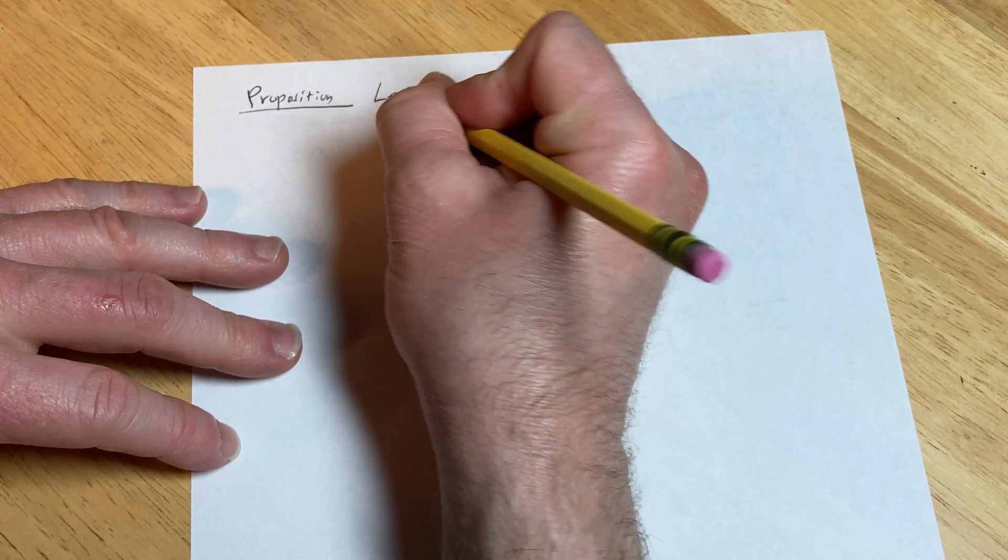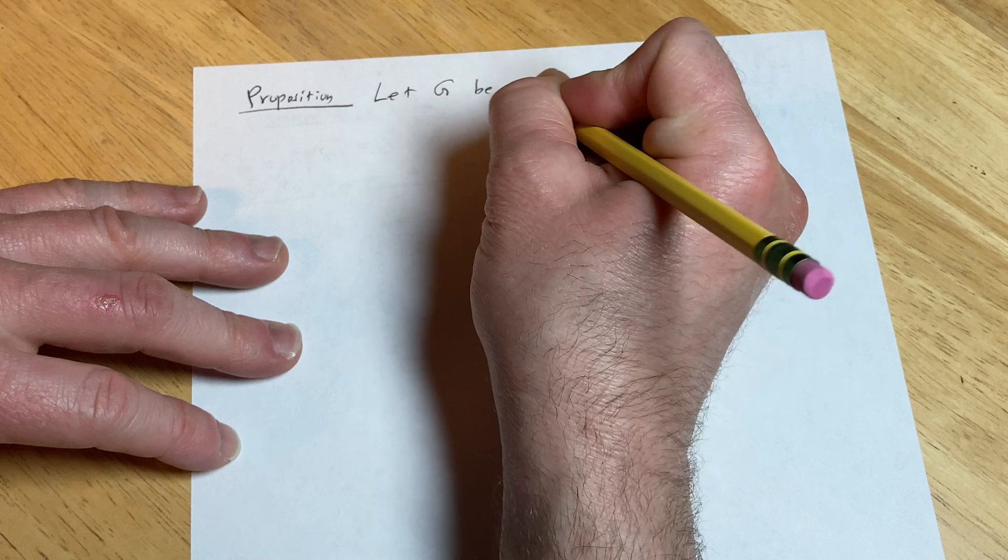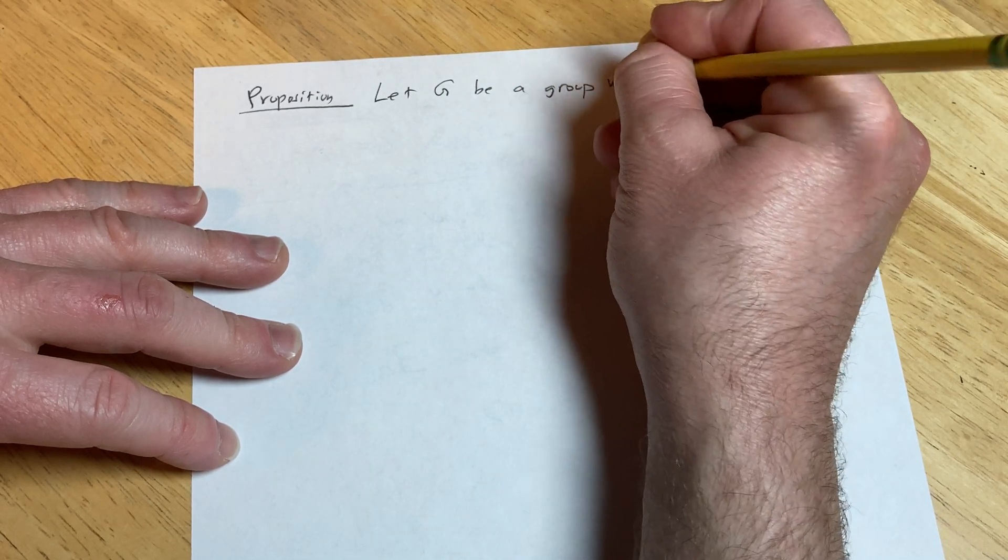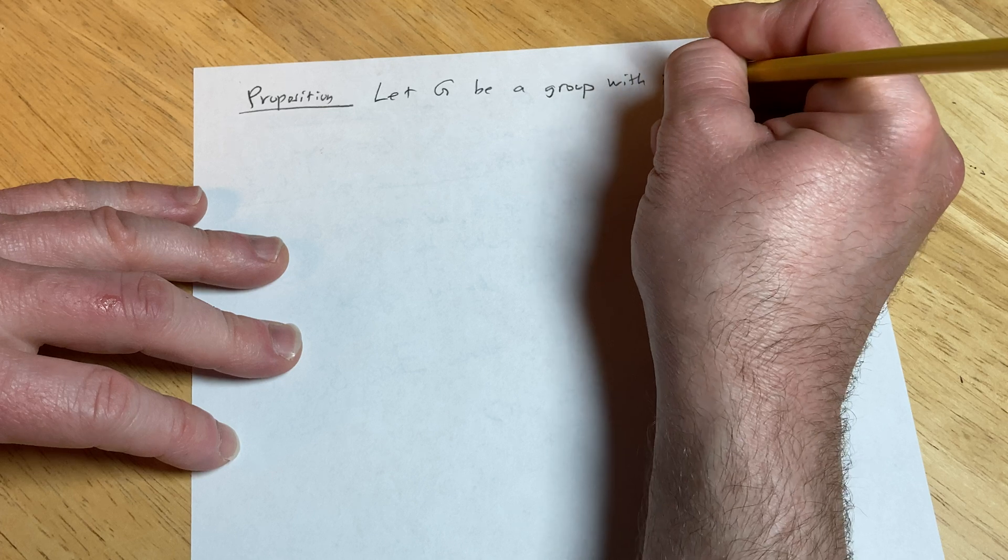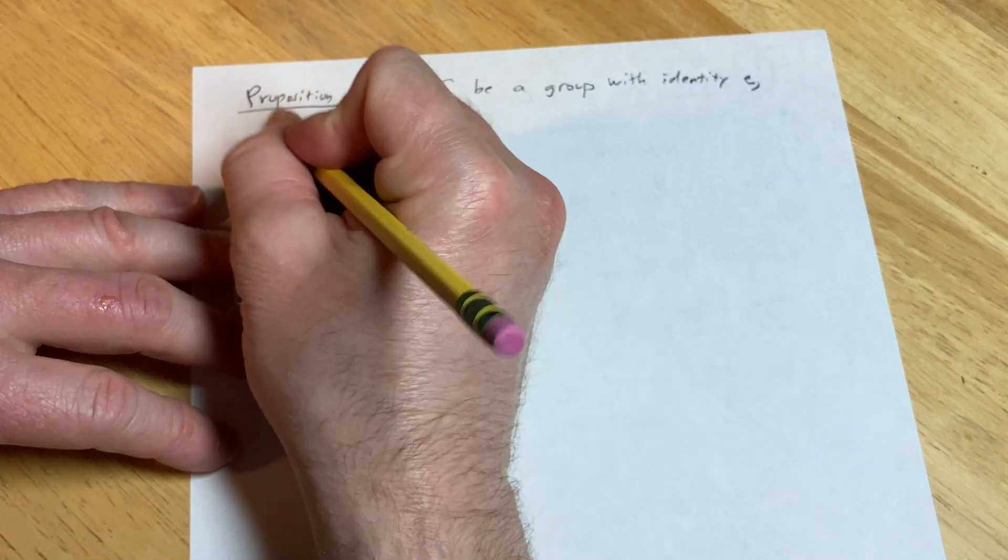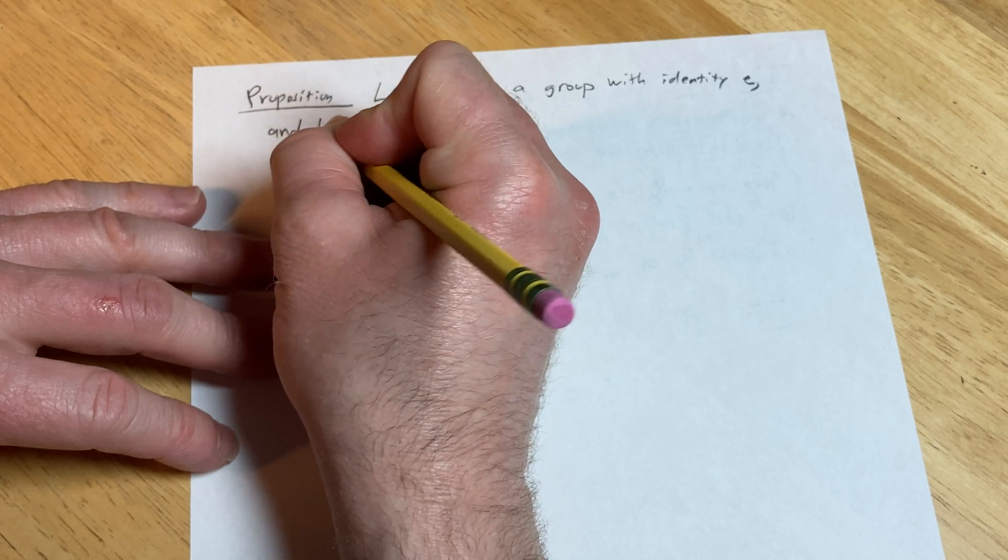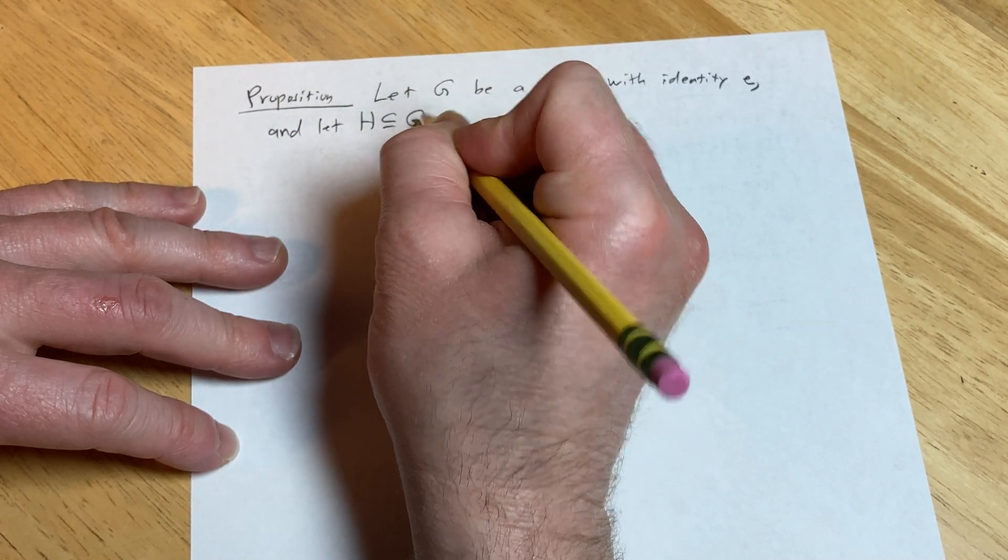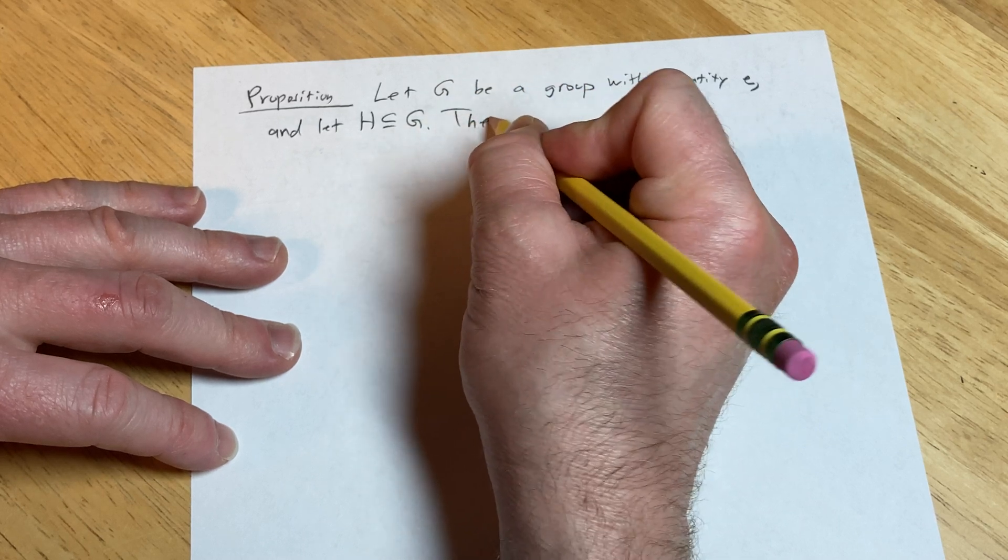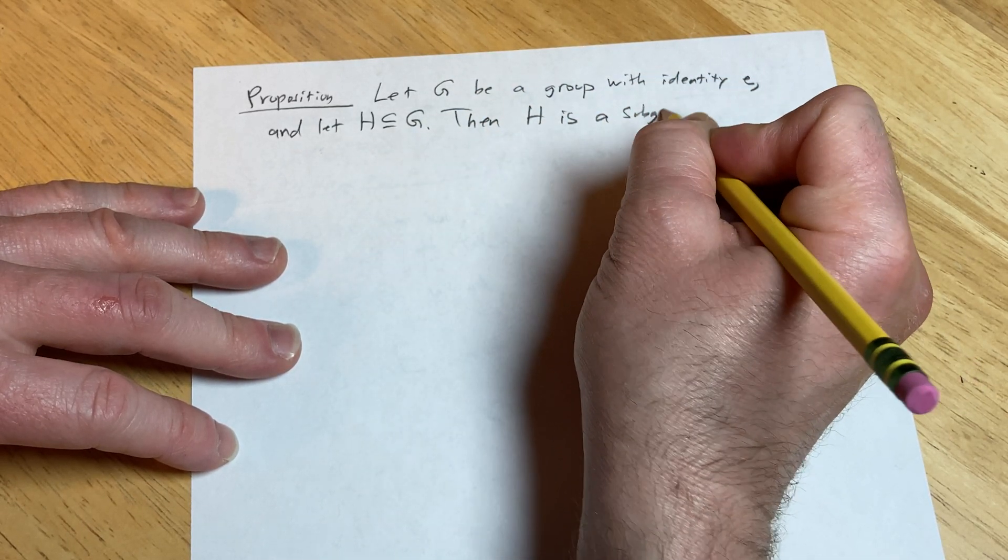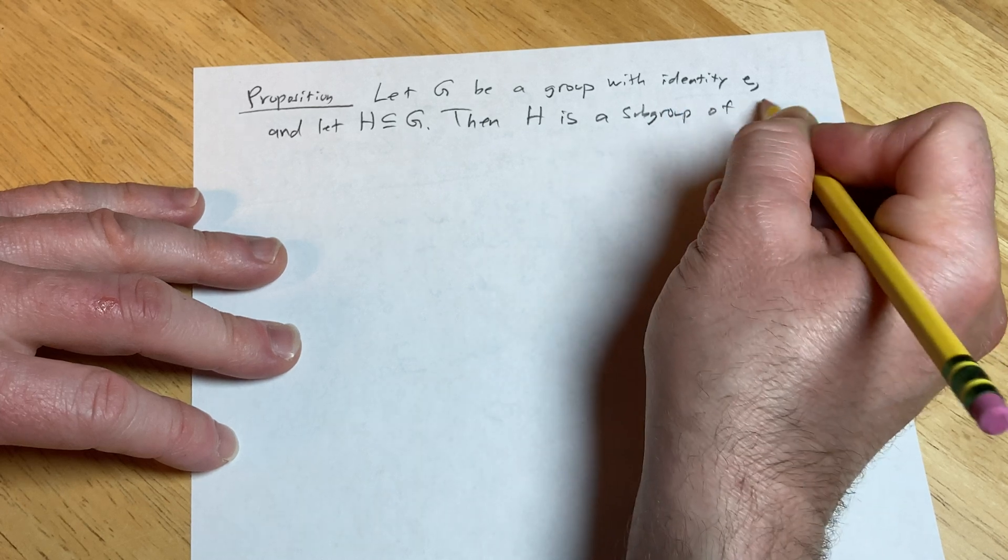And we're going to let G be a group with identity E. And let H be a subset of G. Then H is a subgroup of G.